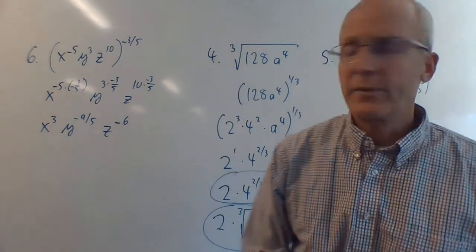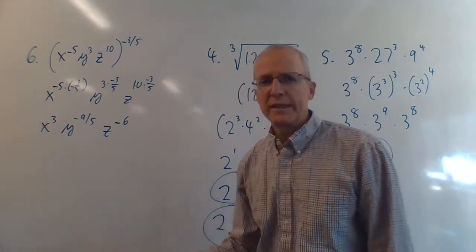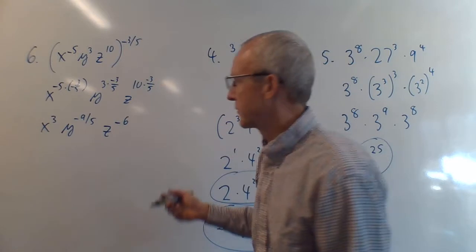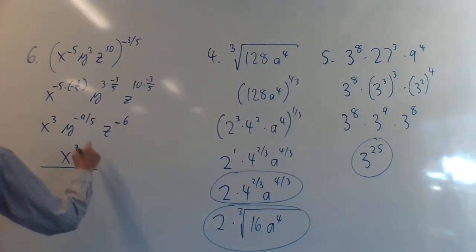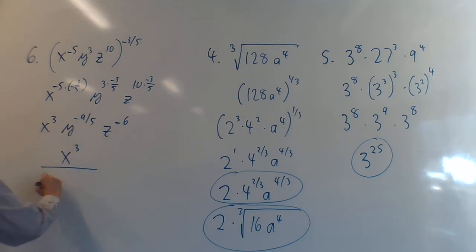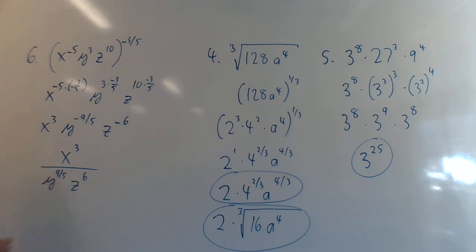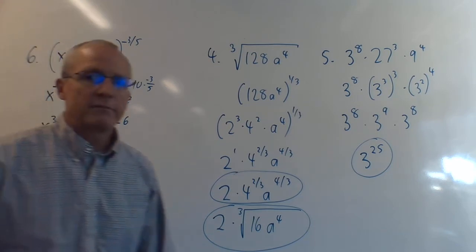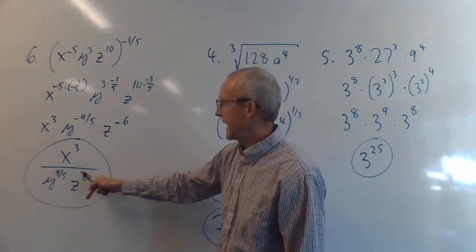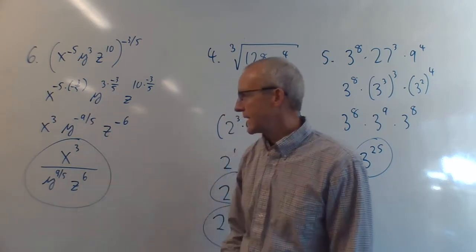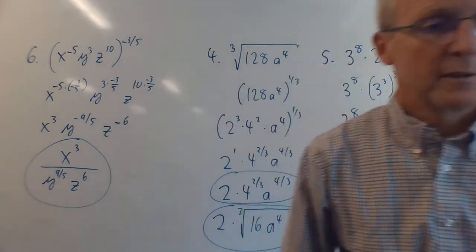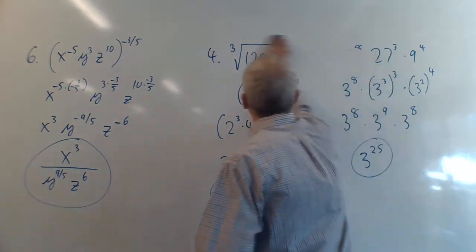To simplify, move negative exponents to the denominator: result is x³ / (y^(9/5) · z⁶). That's the cleanest way to write it — negative exponents in the denominator are cleaner for our brains and I'd accept that on a test.